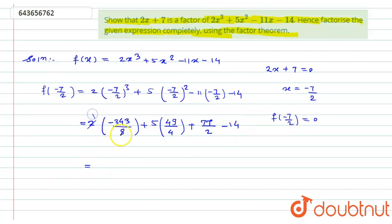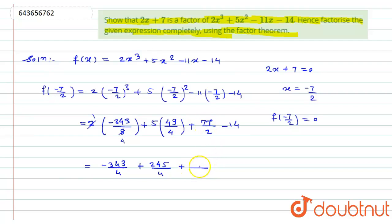Simplifying: 2·(−343/8) = −343/4. To get a common denominator of 4, I convert 77/2 to 154/4, and −14 becomes −56/4. So we have −343/4 + 245/4 + 154/4 − 56/4.